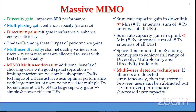These are the three major gains achievable with massive MIMO. There is a trade-off among them — we cannot achieve all three optimally simultaneously, but we can achieve the optimal trade-off. We also have multi-user diversity: since channel quality varies across users, system resources can be allocated to those with the best channel quality.